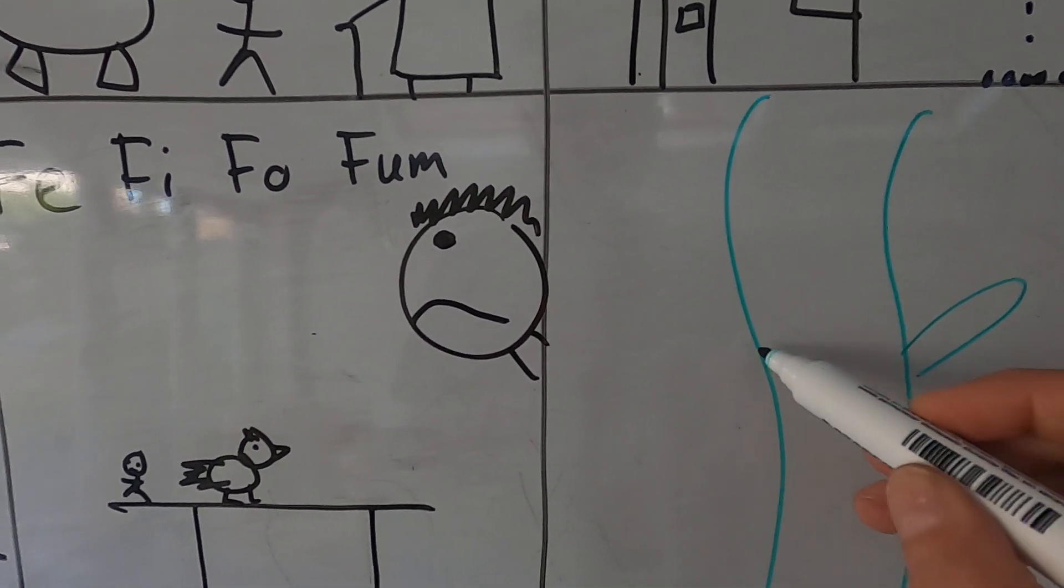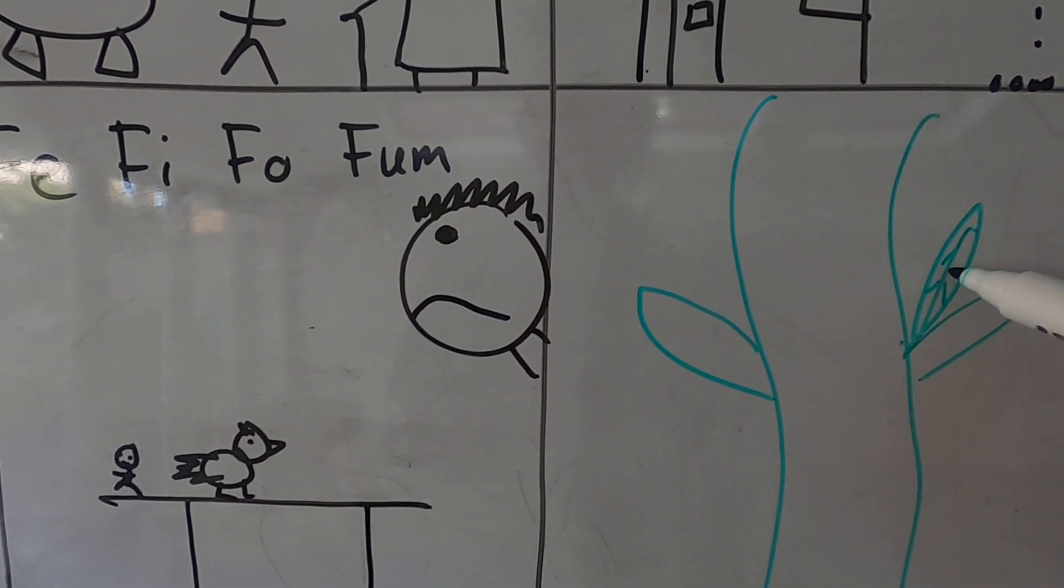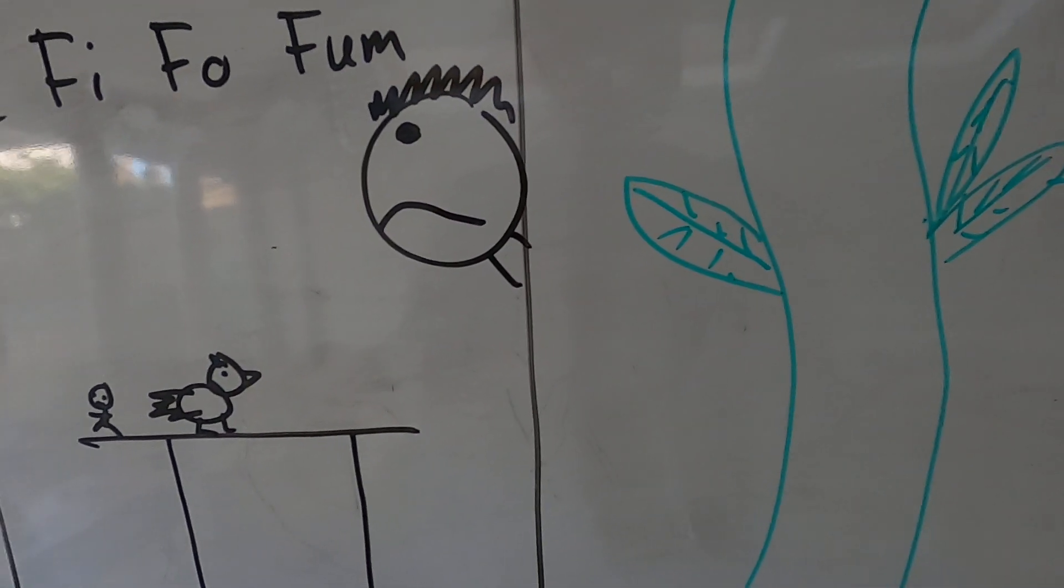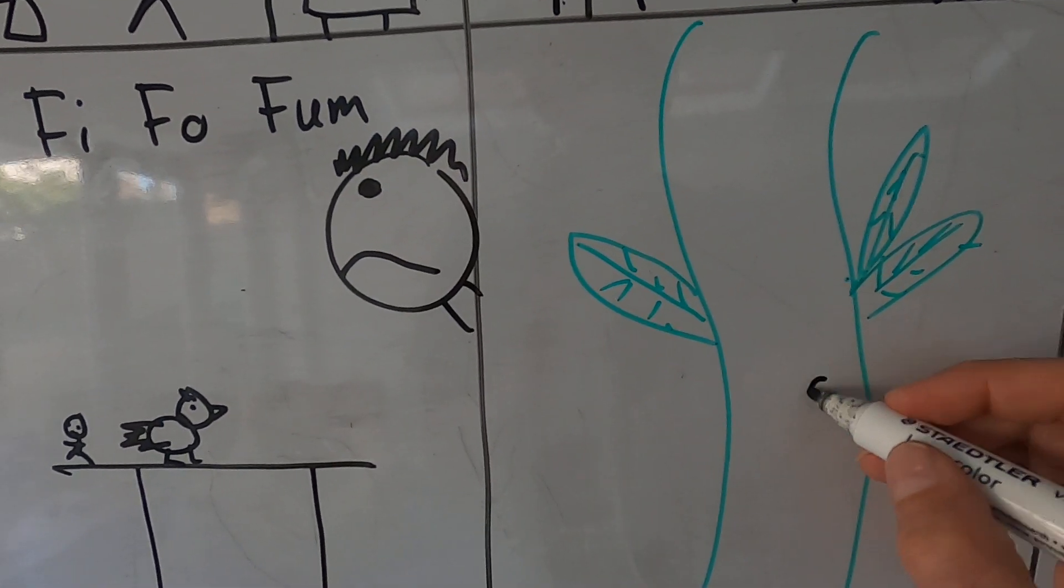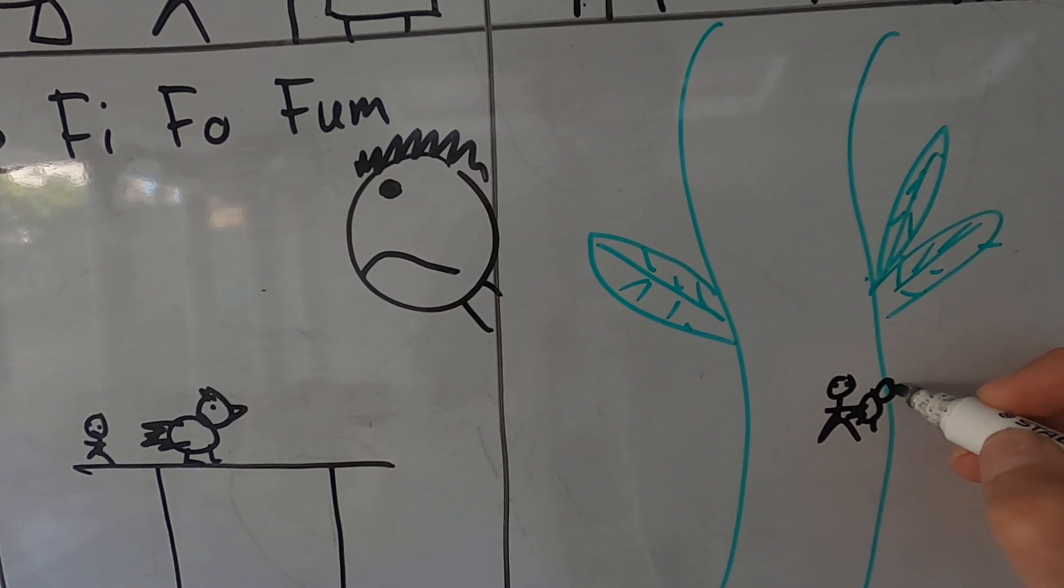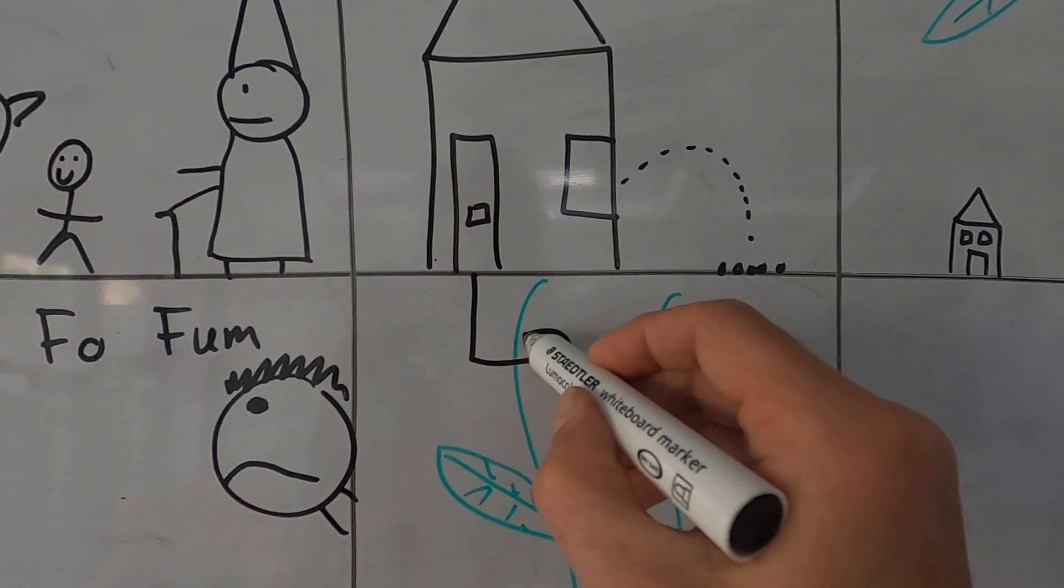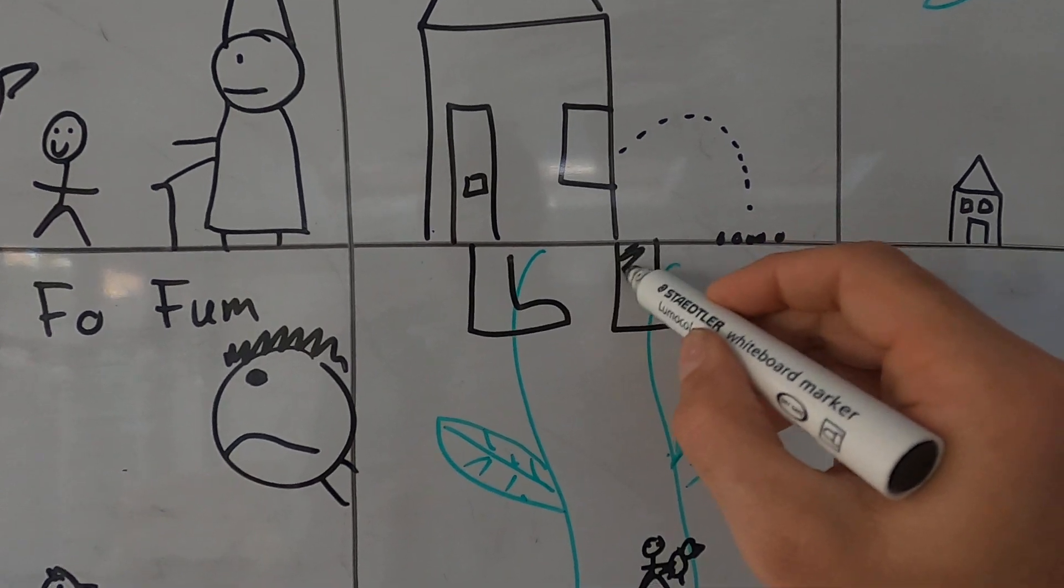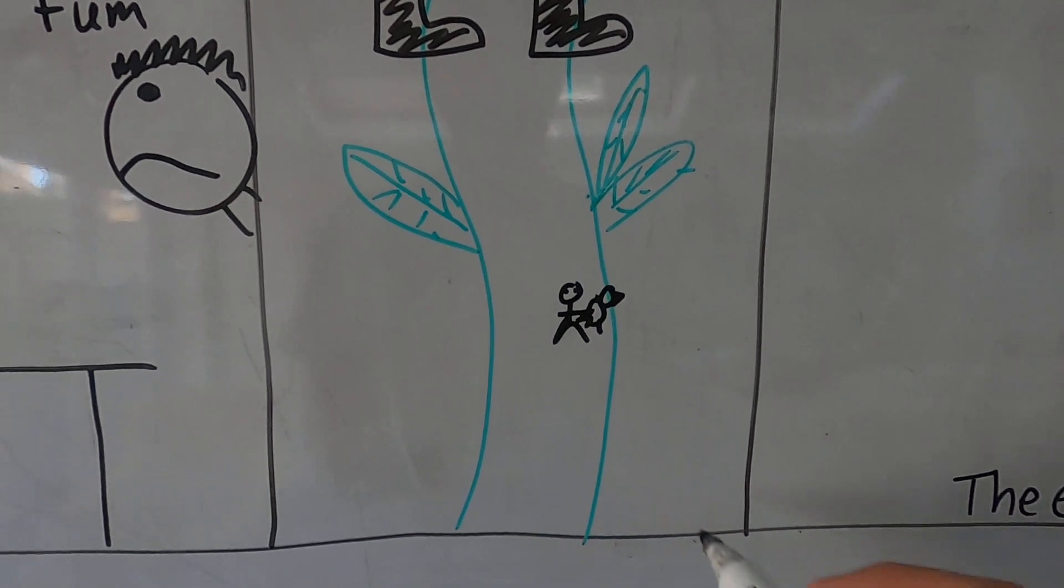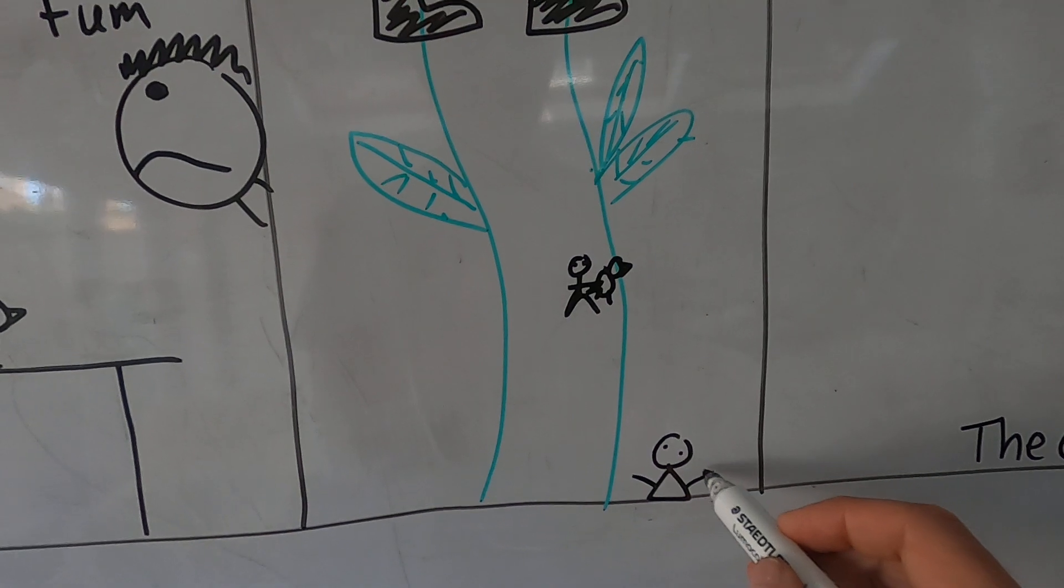Here's the beanstalk. More leaves. And here's Jack running down with the chicken under his arm. But here comes the giant. And he went. And he said quick mum, help. There's mum. Get the axe. So she gets the axe.